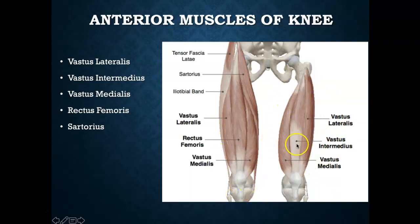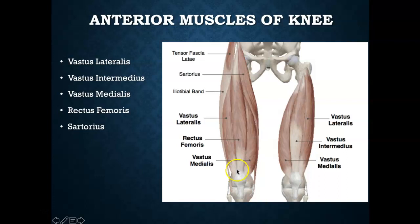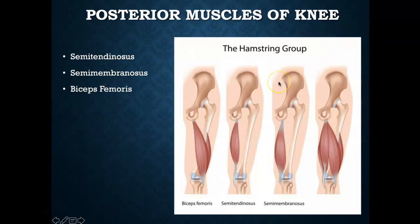All four quadriceps muscles come down and, by way of the quadriceps tendon, have a superior attachment to the superior pole of the patella. As a whole, the anterior muscles of the knee concentrically contract to control knee extension and eccentrically slow down the rate of knee flexion.